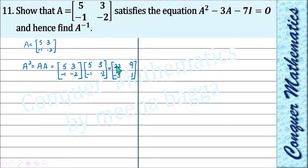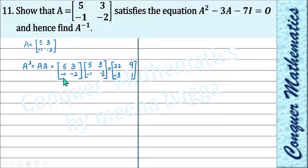I hope you have completed. To calculate this matrix, use the first row with first column to get element (1,1), first row with second column for (1,2), second row with first column for (2,1), and second row with second column for (2,2). Remember this rule.